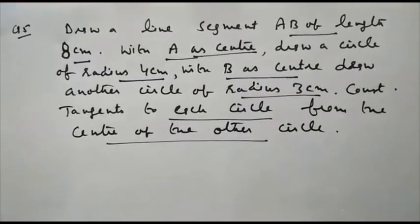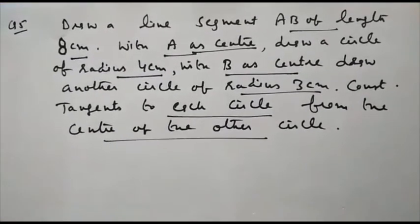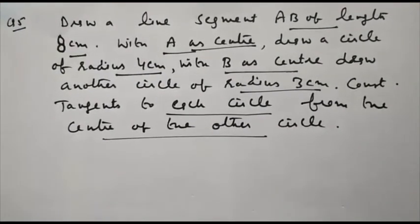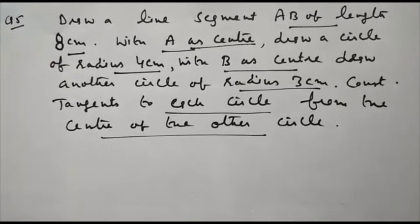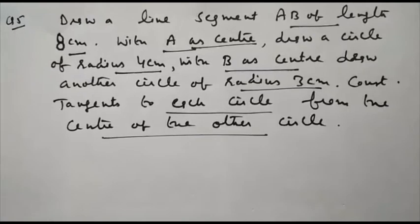Now, question number 5. Draw a line segment AB of length 8 cm. With A as center, draw a circle of radius 4 cm. With B as center, draw another circle of radius 3 cm.